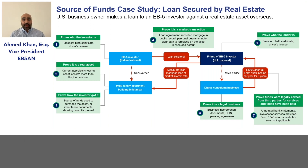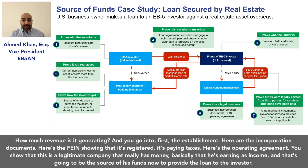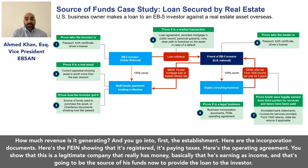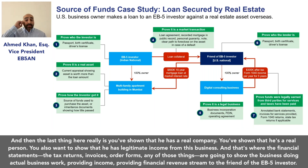You go into the establishment of the business: here are the incorporation documents, here's the FEIN showing it's registered and paying taxes, here's the operating agreement. You show that this is a legitimate company that is generating real income — and that income is going to be the source of funds for the loan to the EB-5 investor.